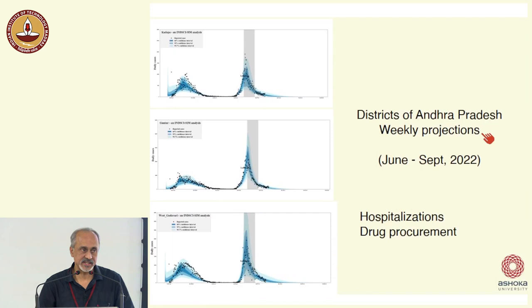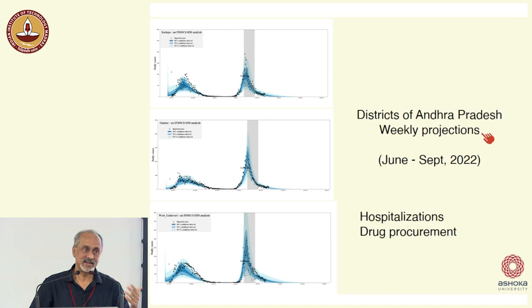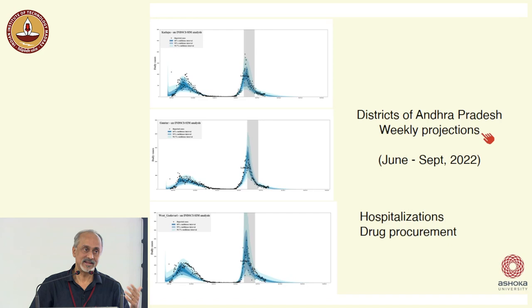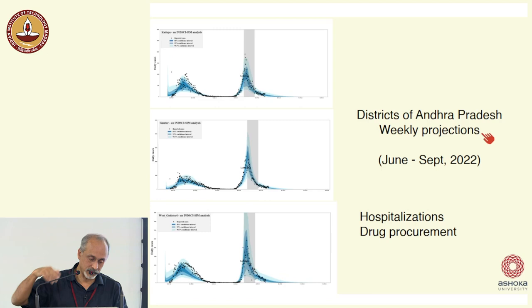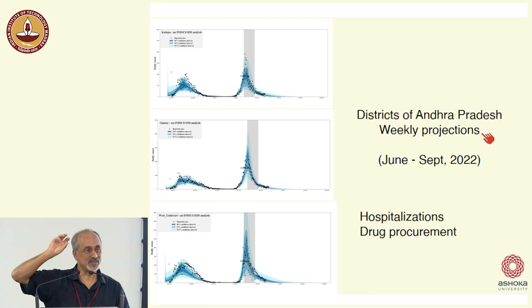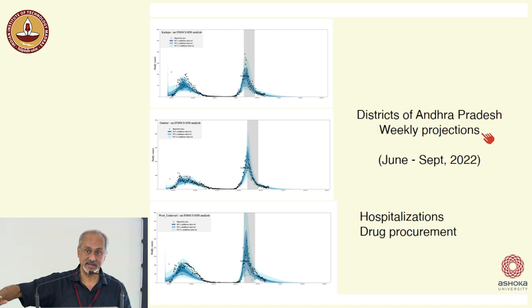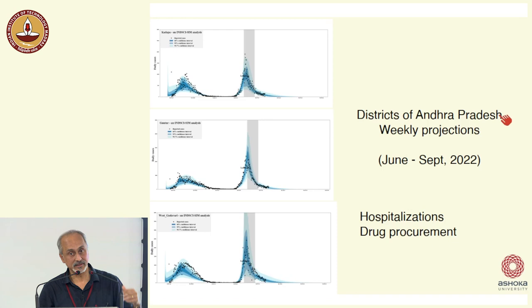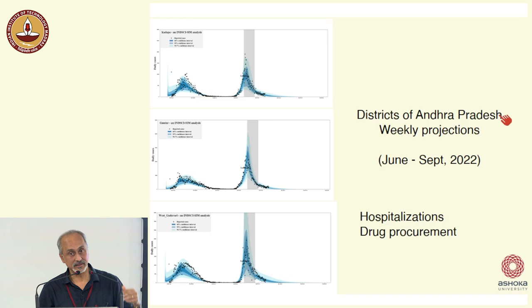We can use models like these to make much more specific projections. This is work we did with the Andhra Pradesh government, looking at weekly projections. As was pointed out, one shouldn't project too far into the future — ideally a week to 10 days, because things are not expected to change much over that time. Over longer periods, behavior modifications, new variants, etc. will begin to enter. We can look at the nature of undercounting, expected number of cases, hospitalizations, etc. This is an example where the government actually requested drug procurement based on what we said might be expected in the weeks to come in different parts of the pandemic. That's where policy enters: commitments of government money given a certain understanding of what is expected in the future.